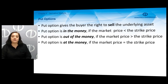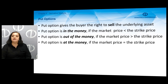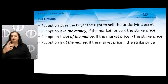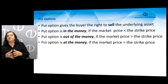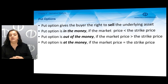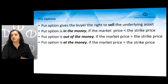On the contrary, a put option gives the buyer or holder the right to sell the underlying asset at a predetermined price defined in the option contract. A put option is in the money if the market price is below the strike price. A put option is out of the money if the market price is above the strike price. A put option is at the money if the market price equals the strike price. The definitions of in the money, out of the money, and at the money are opposite for put options compared to call options.